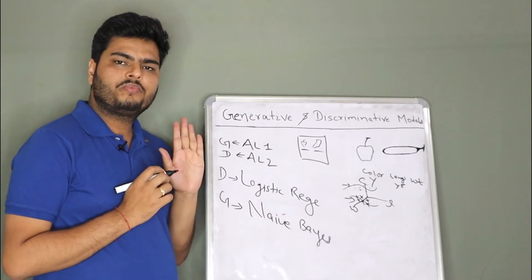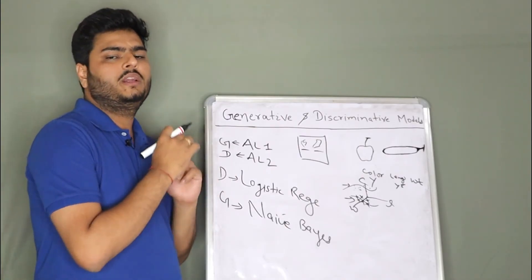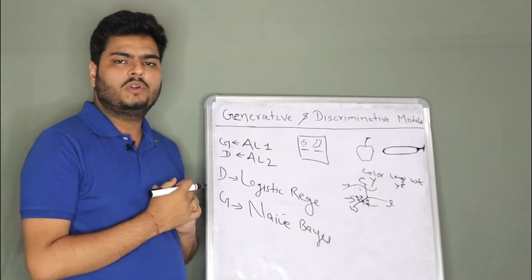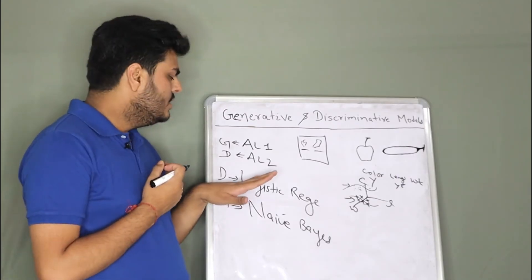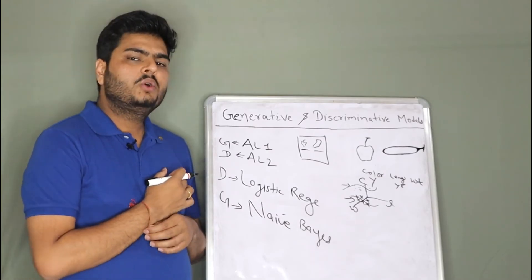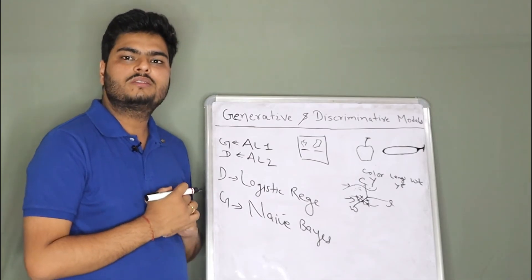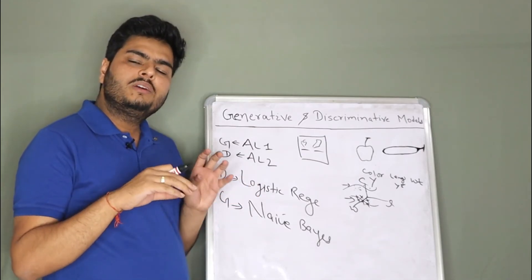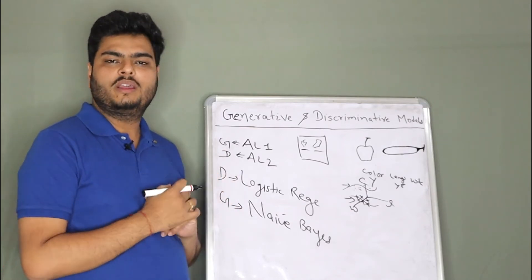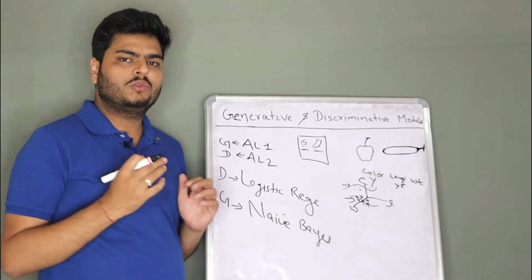So this is the basic difference between how a discriminative model works and how a generative model works. Now, which model do you think will get impacted by missing data? Which model will need more data for training and which model will need less data? Which model will get impacted by outliers? Which model will need more mathematical calculations? Which model will tend to overfit and which model will not?